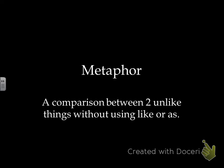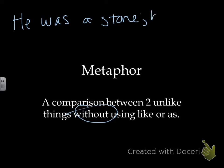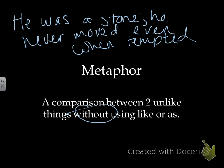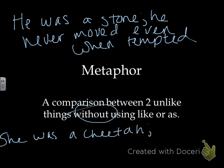Metaphor, on the other hand, is a comparison between two unlike things without using 'like' or 'as.' So you could say, 'he was a stone — he never moved, even when tempted.' Or you could say, 'she was a cheetah, running faster than everyone.'